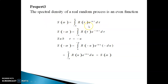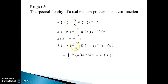You consider the definition of the spectral density function, replace ω with −ω on both sides, and make the substitution τ = −u. You get R(−u) e^(iωu) (−du). When you interchange the limits, the negative sign from the limits and the negative sign from −du cancel to become positive. Since the autocorrelation function is even, R(−u) = R(u), giving back the spectral density function. So S(−ω) = S(ω), proving that for a real random process the spectral density is an even function of ω.